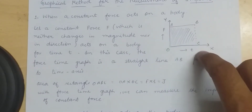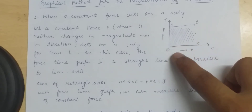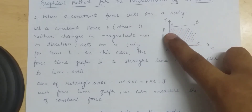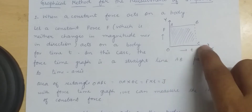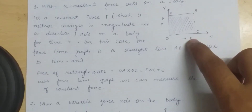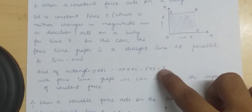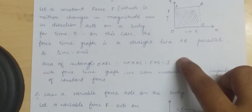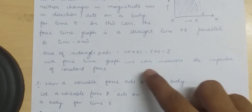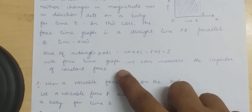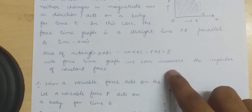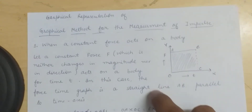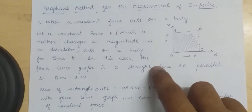The area of rectangle OABC equals OA multiplied by OC. OA can be written as force F, and OC can be written as time t. So force multiplied by time gives impulse, written as J. Thus, with a constant force-time graph, we can measure the impulse of a constant force.